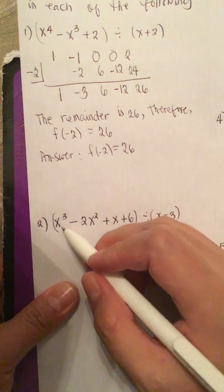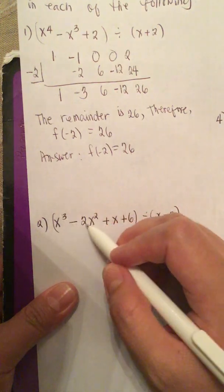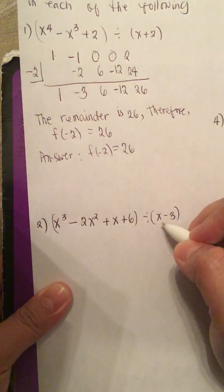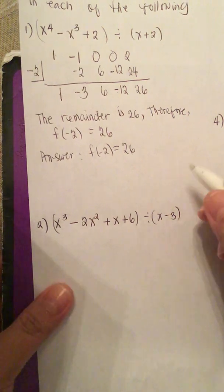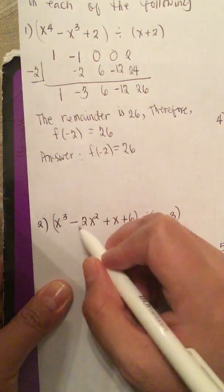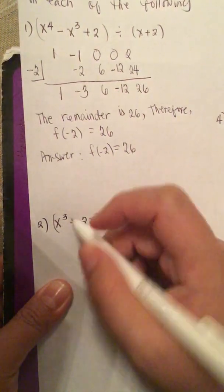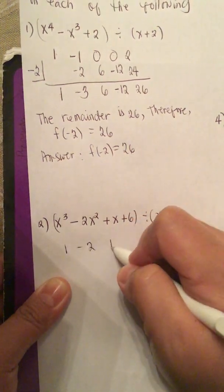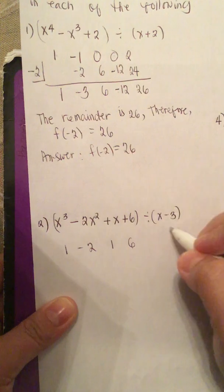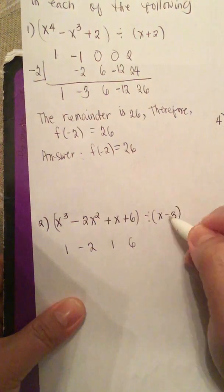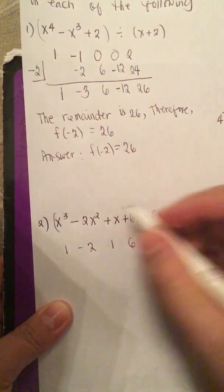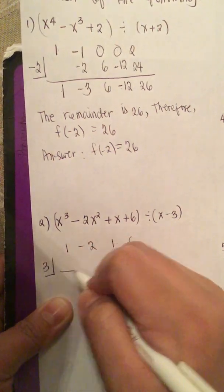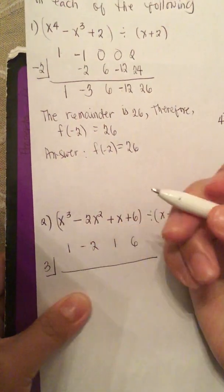Next problem: x cubed minus 2x squared plus x plus 6, divided by x minus 3. We do the same thing — list all the coefficients. So we have 1, negative 2, 1, and 6 for the constant. Since we have x minus 3, the root is positive 3.